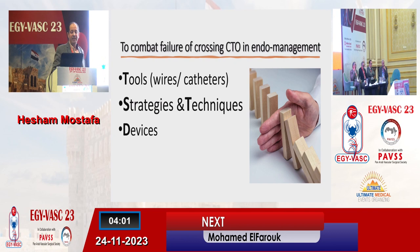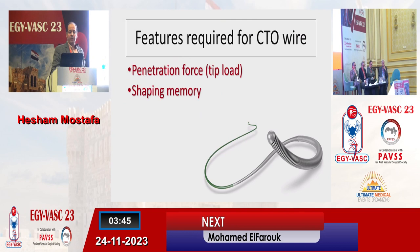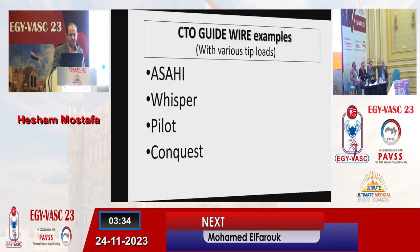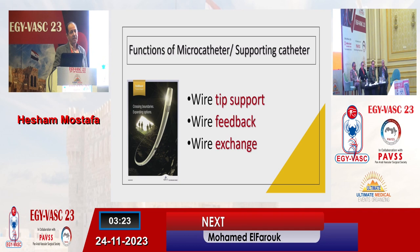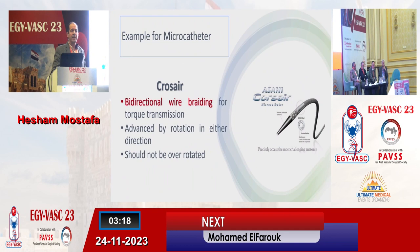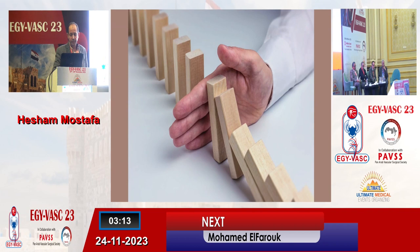By tools I mean wires and catheters. By techniques, it should be preceded by strategies. At the end we have devices, but please don't forget that we are vascular surgeons — we can go back to the open solution. Concerning the wires, we have criteria in the wire dedicated for CTO: criteria in the tip and criteria in the shaft. These are examples for the wires used for CTO. For the catheters, we have certain features and functions that can support, give feedback, or allow wire exchange. This is an example for a catheter used with a wire to cross CTO.